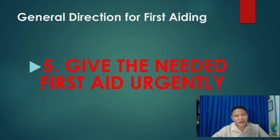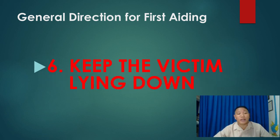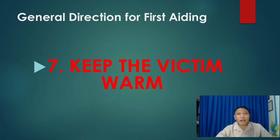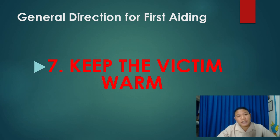Give the needed first aid urgently — this will be tackled in module 2. Keep the victim lying down — do not move the patient unnecessarily, because the more you mobilize the patient or victim, the more the situation will worsen. Keep the victim warm. Keeping the victim warm increases circulation in the body. Blood carries oxygen as well as nutrients and vitamins. The faster the circulation, the faster the absorption of minerals, vitamins, and oxygen inside the body.